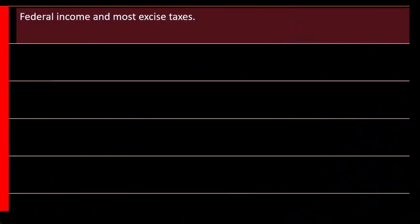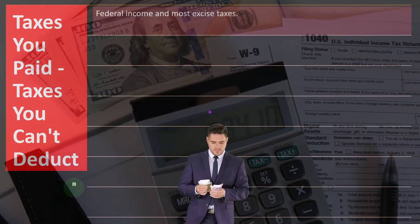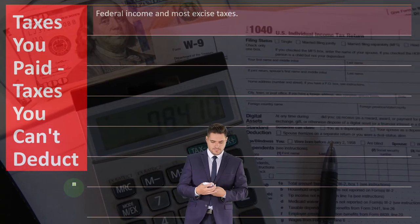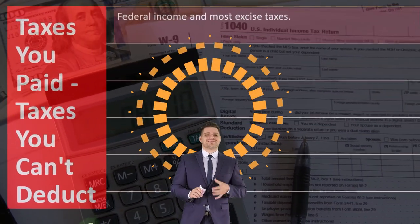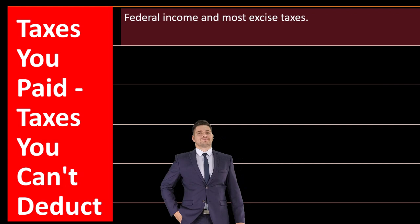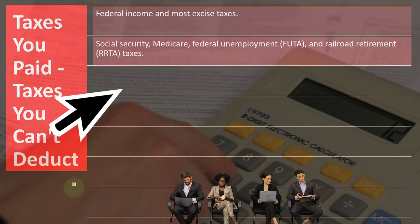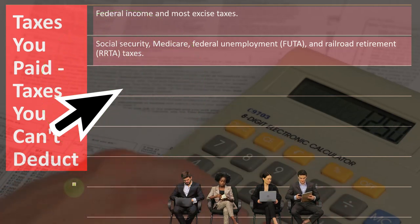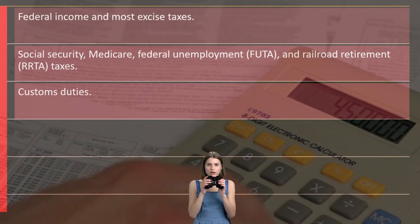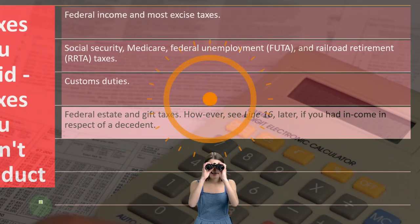Which taxes are deductible for federal income tax purposes? First, the ones you cannot deduct: the federal income tax itself — of course you cannot deduct that because it would be a circular reference. Most excise taxes, Social Security, Medicare, federal unemployment (FUTA), and railroad retirement (RRTA) — these are the payroll taxes. You also can't deduct customs and duties, federal estate and gift taxes, or certain state and local taxes including tax on gasoline and car inspection.